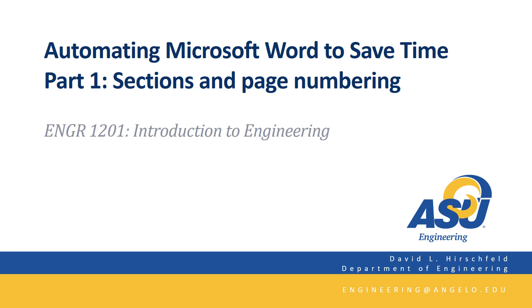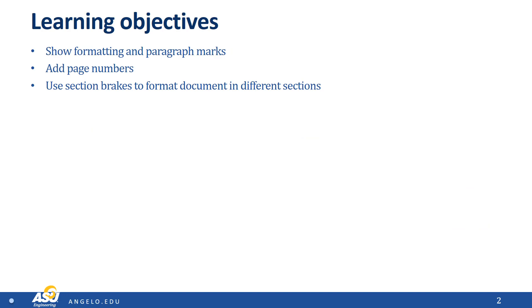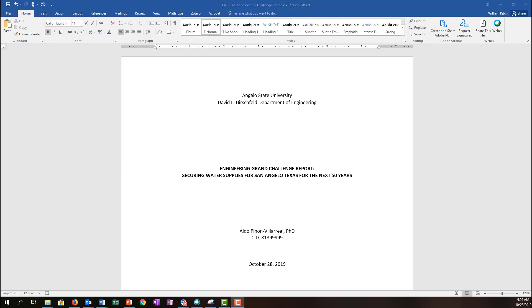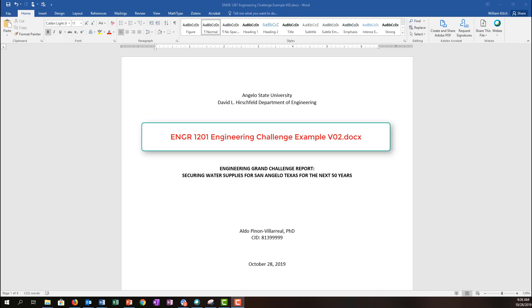Hello, this is Professor Kitsch, and this is the first in a series of webcasts to show you how to automate Microsoft Word and save time in preparing your documents. In this particular webcast, you will learn how to turn on and off the formatting and paragraph mark symbols within Microsoft Word, how to add page numbers, and also how to use section breaks so you can format your document into different sections. We will be using the Engineering Challenge example document, which you can download from your Engineering 1201 Blackboard.